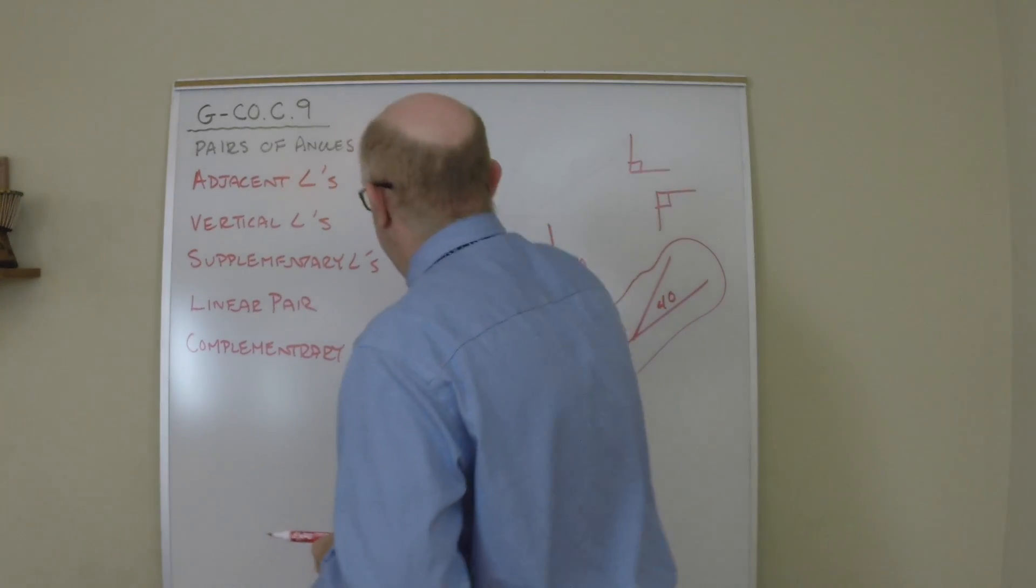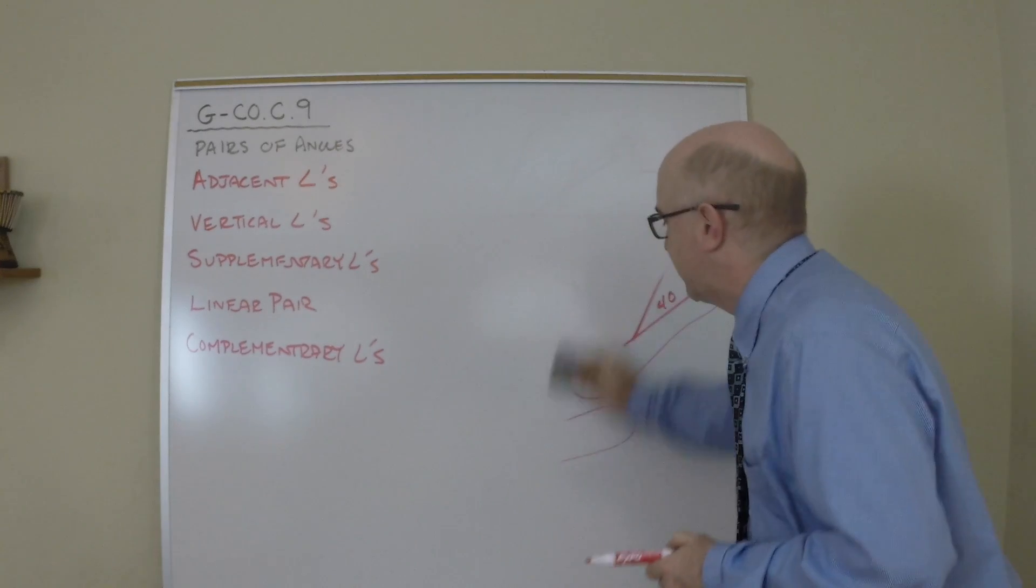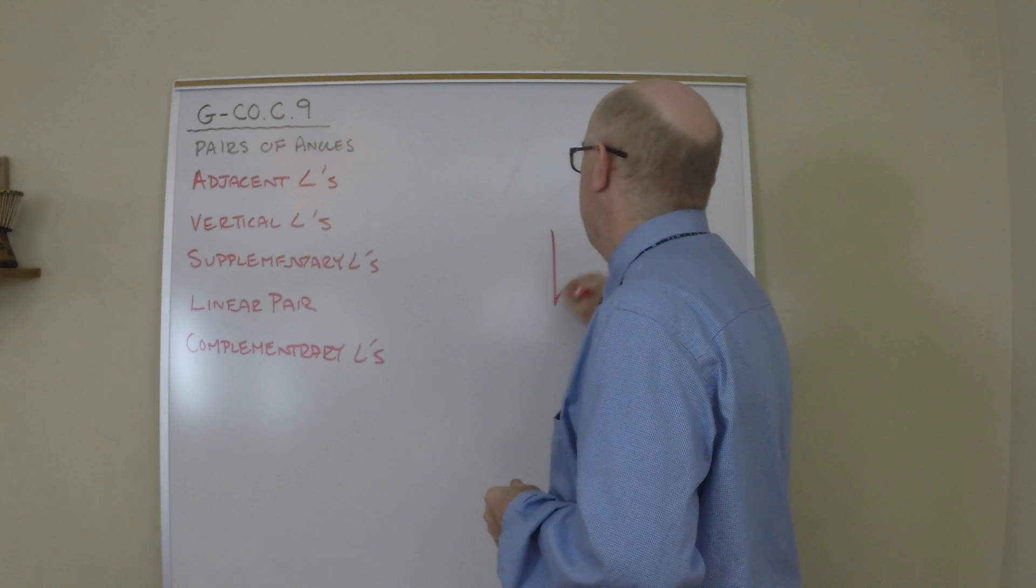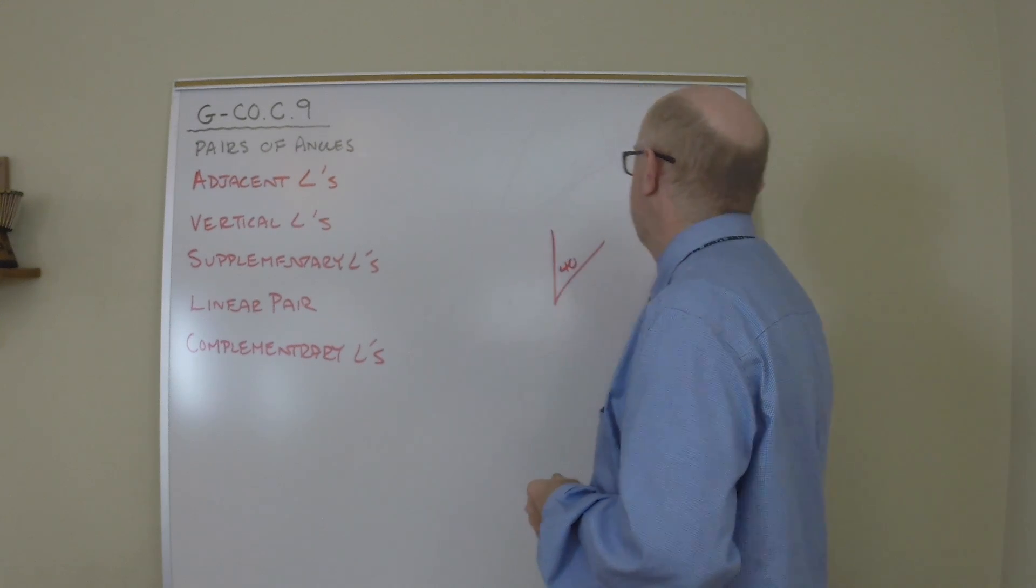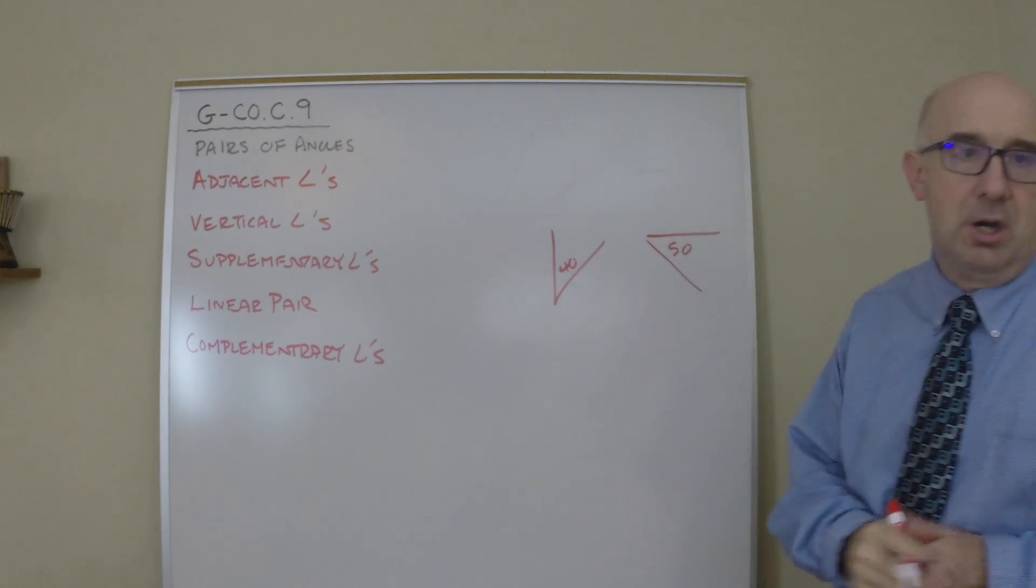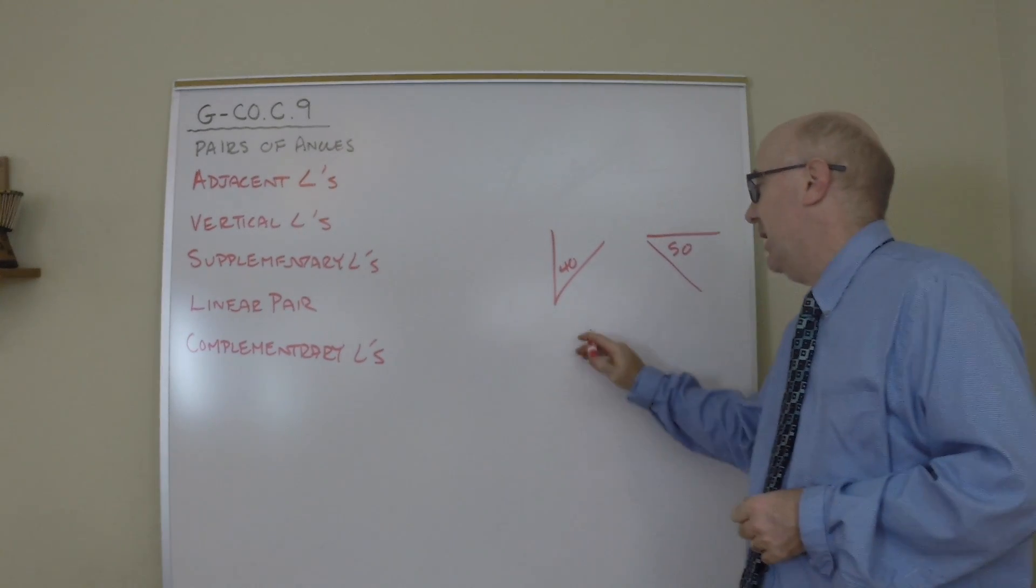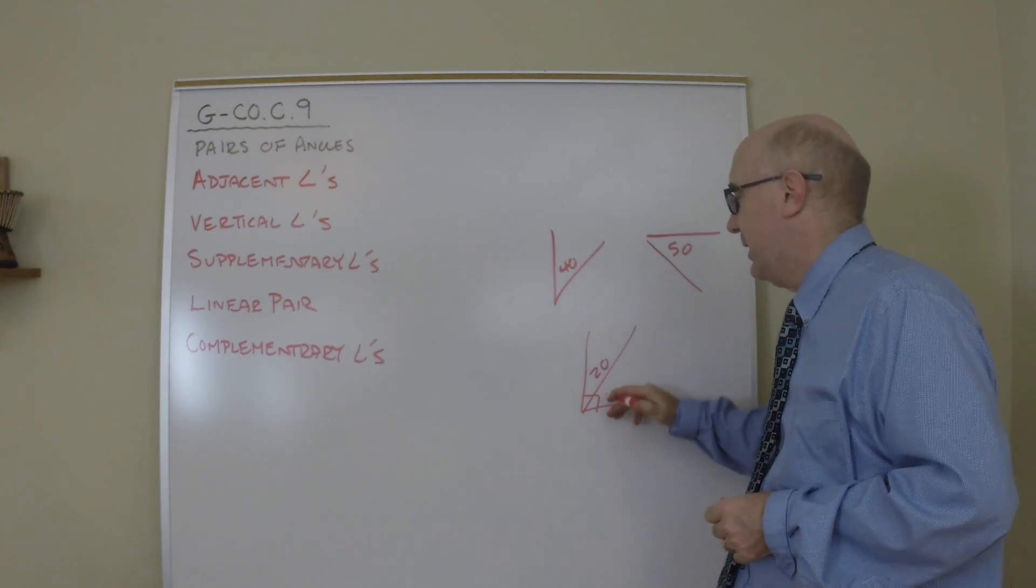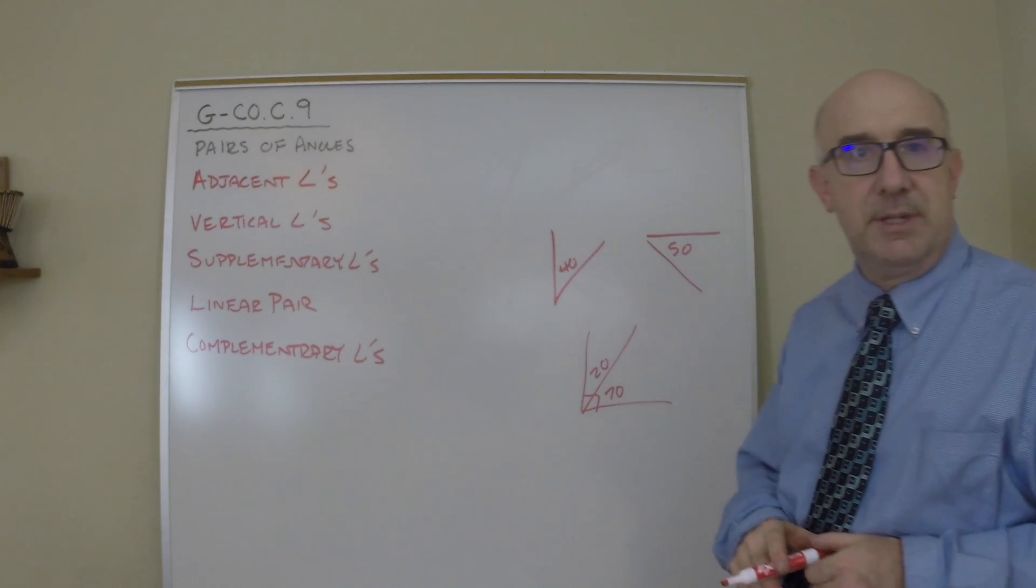Finally, complement angles or complementary angles. These are angles that sum to 90. That could be a 40 degree angle and a 50 degree angle. These are complements. You could have a right angle that's given and then shown. Say this is 20 and 70. These are also complements.